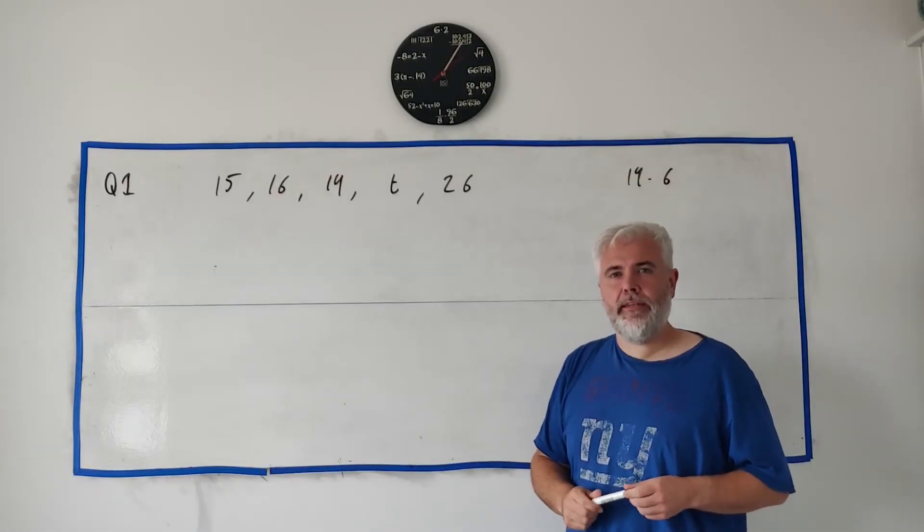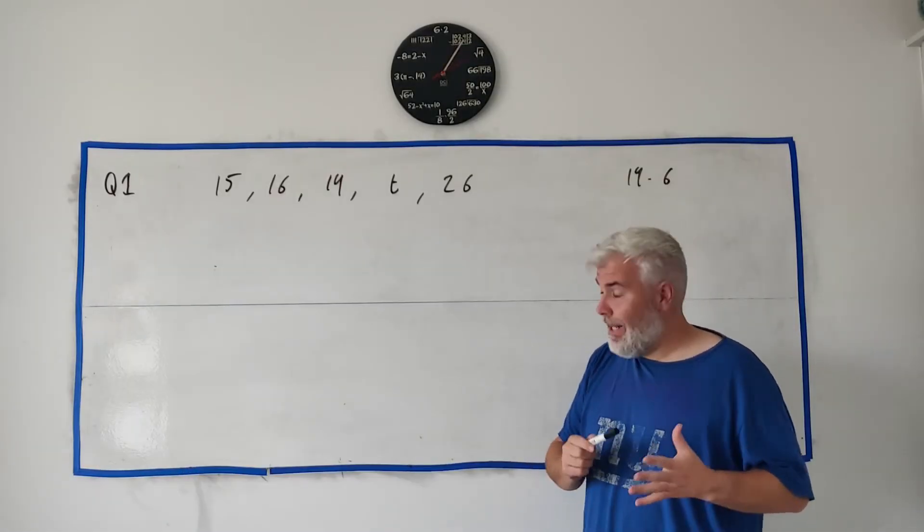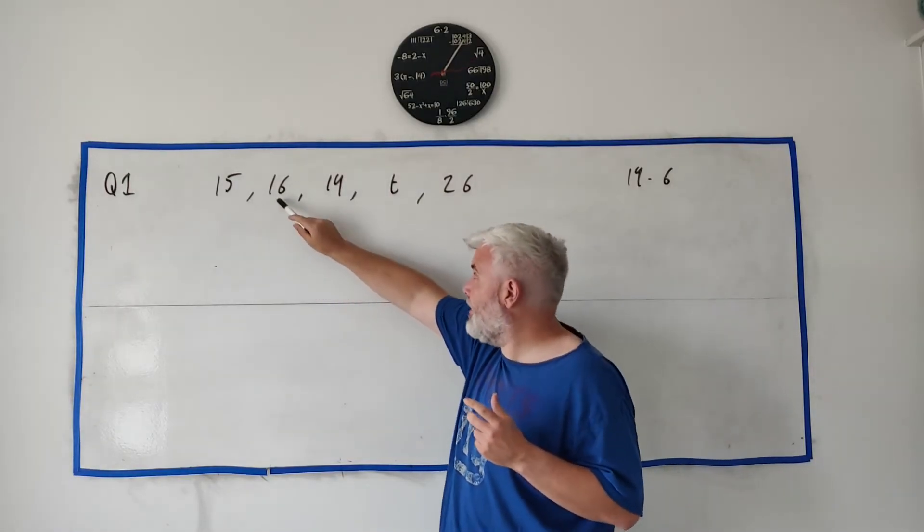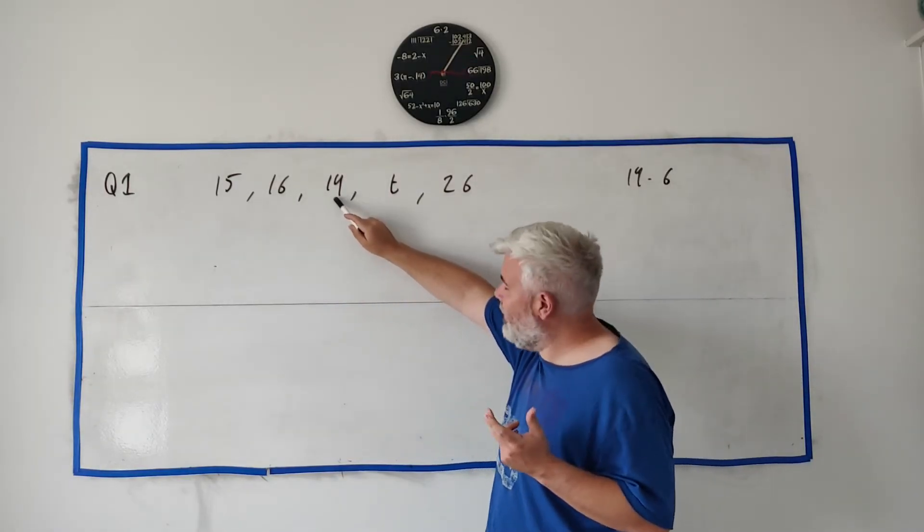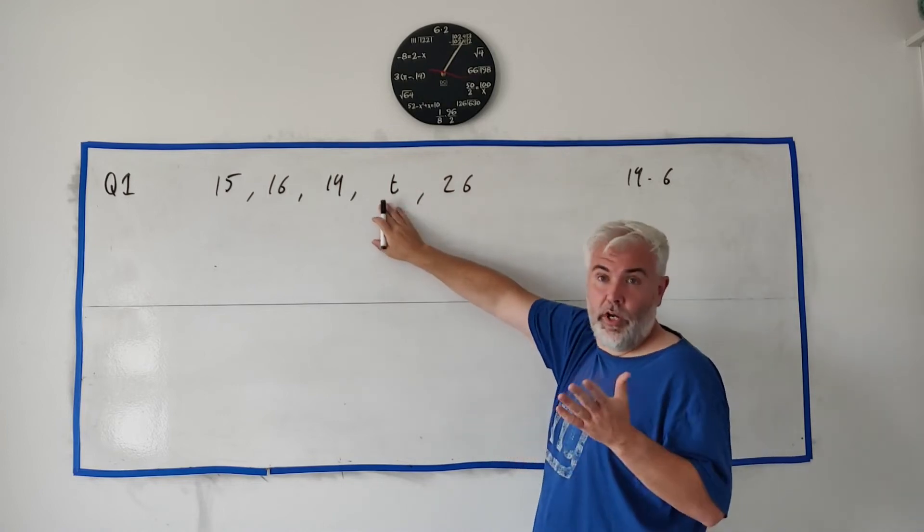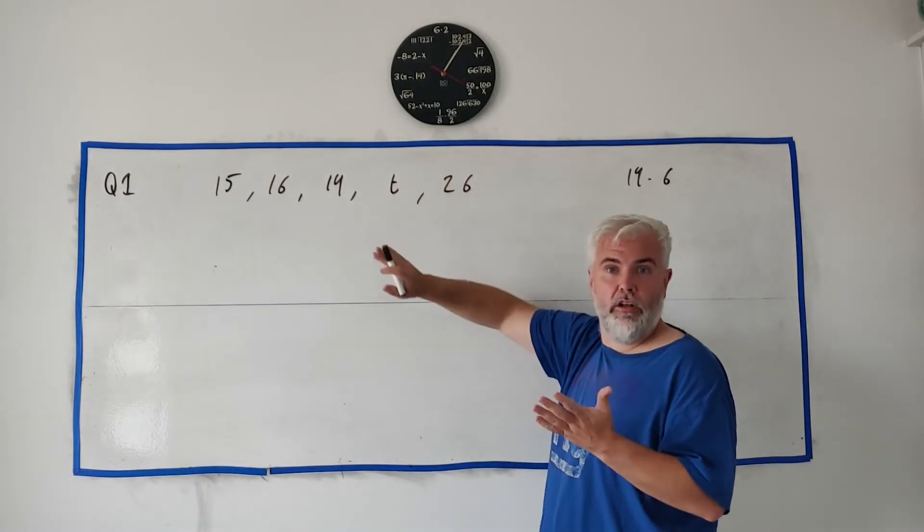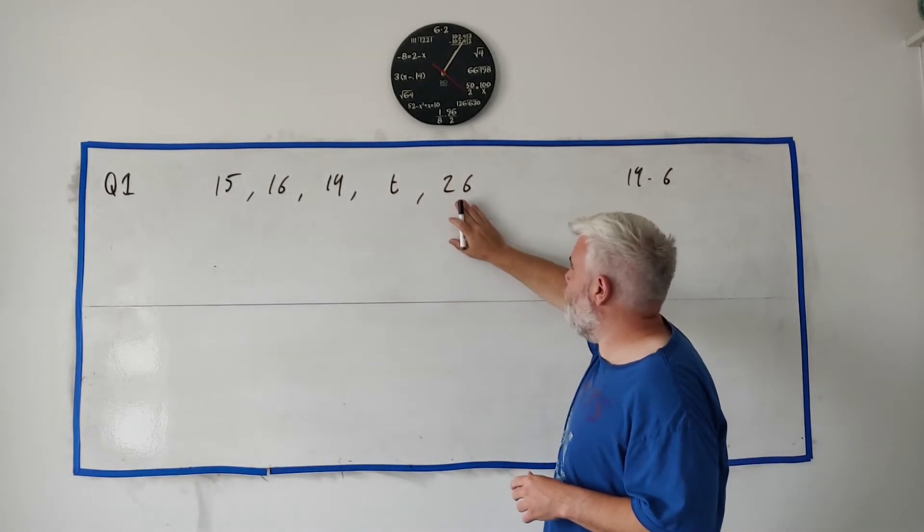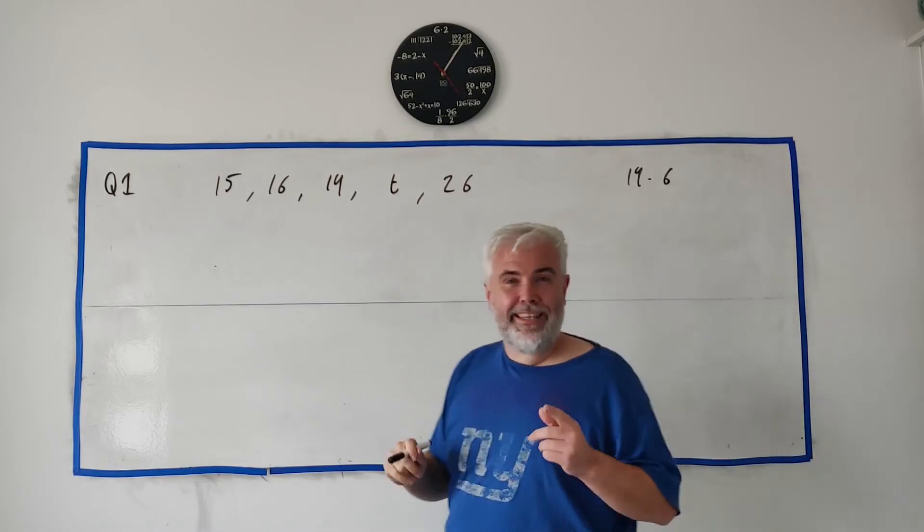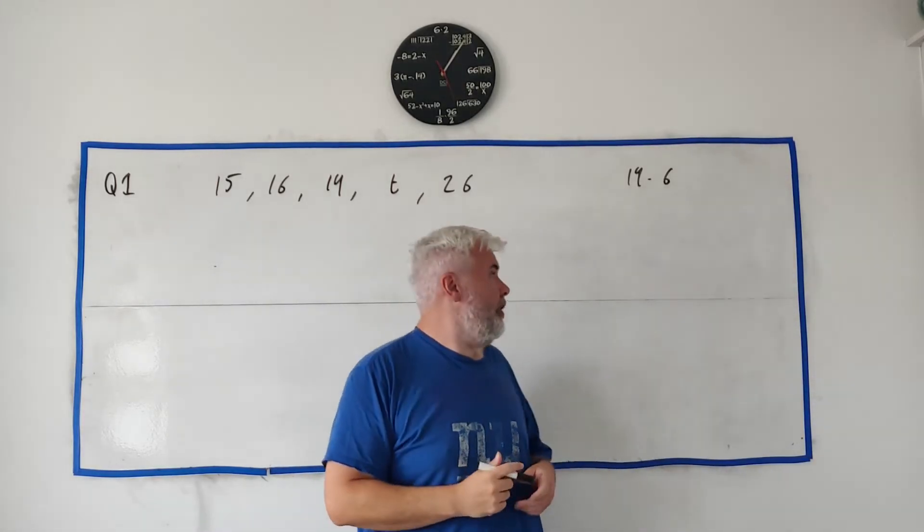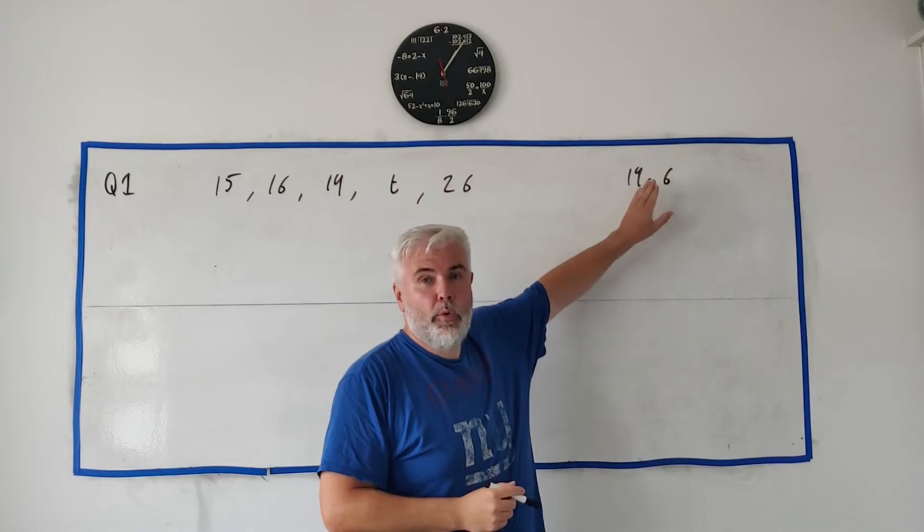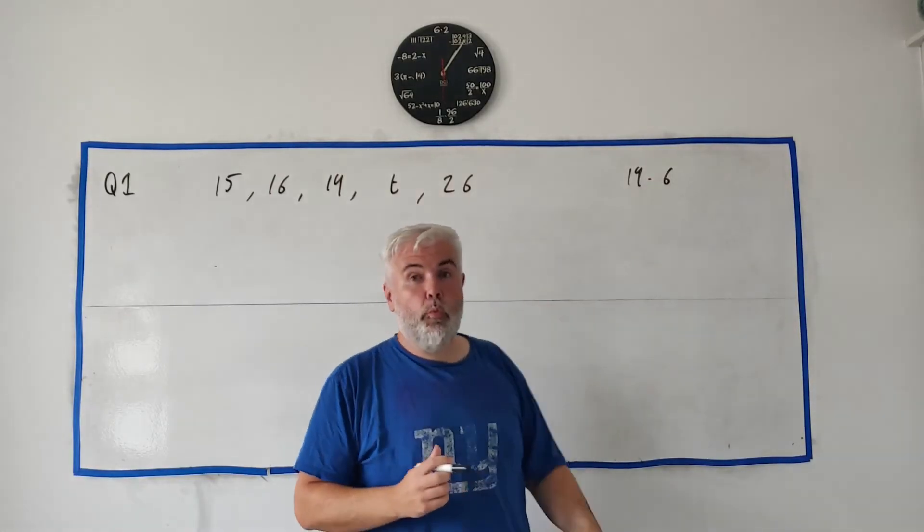For part B, they tell us a group of students did a maths test. And they got these marks here: 15, 16, 19. Some students got marks we don't know, some number we don't know. We call it T here. And someone got 26. Now what they did tell us is the mean of all these numbers. They told us the mean was 19.6. So what is T?